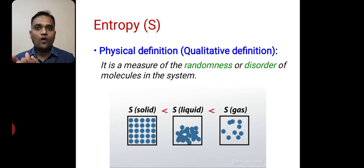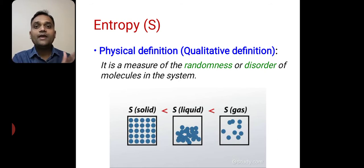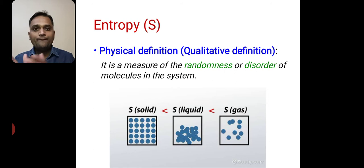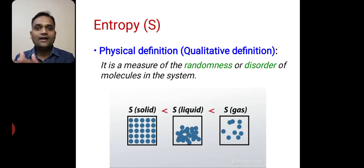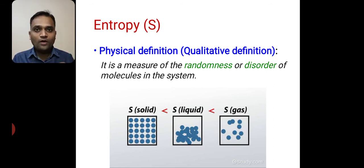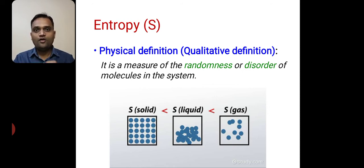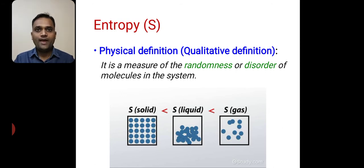While going from solid to liquid to gaseous form, the entropy of the system increases. Why does entropy increase? Because disorder in the system increases, or randomness in the system increases. So entropy is a measure of the randomness or disorder of molecules in the system. This is the physical definition of entropy.